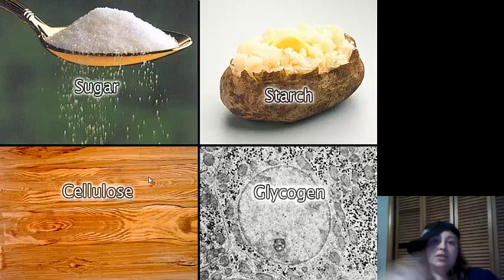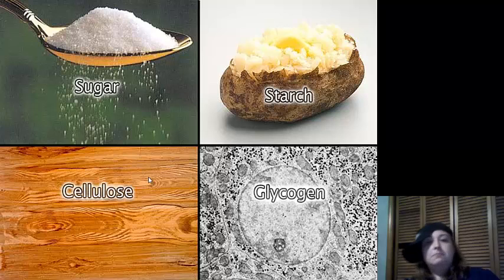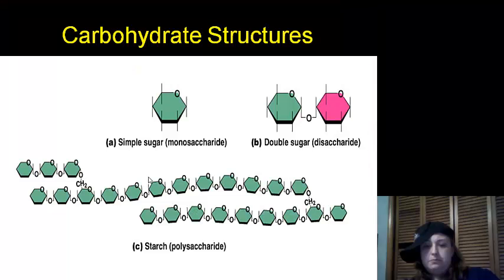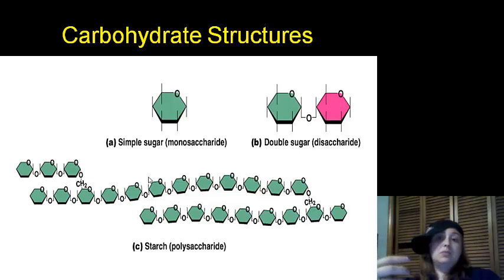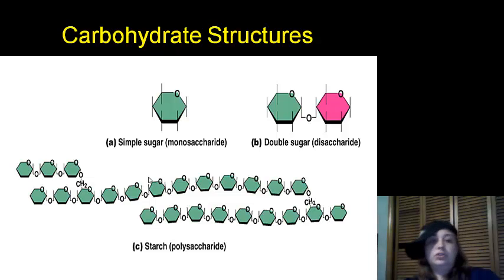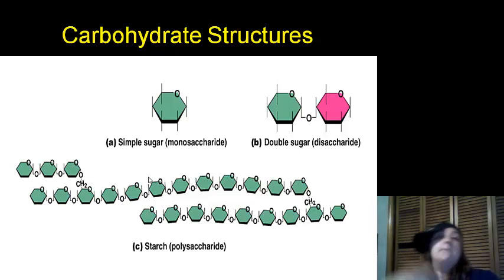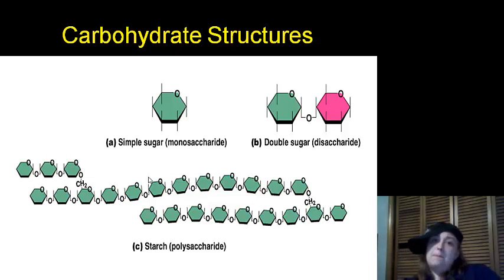So we've got sugar, starch, cellulose, glycogen. Next, looking at structures: simple sugars are monosaccharides — one sugar. Double sugars are disaccharides — two sugars. Then we've got starches, which are polysaccharides — poly meaning many, saccharides meaning sugars — many sugars.